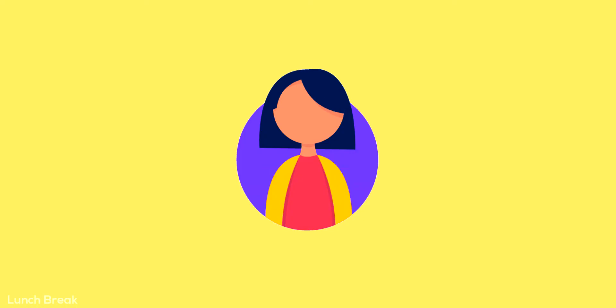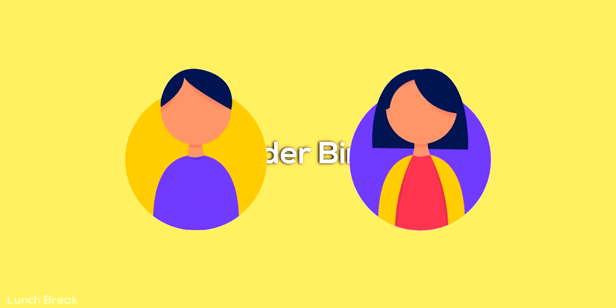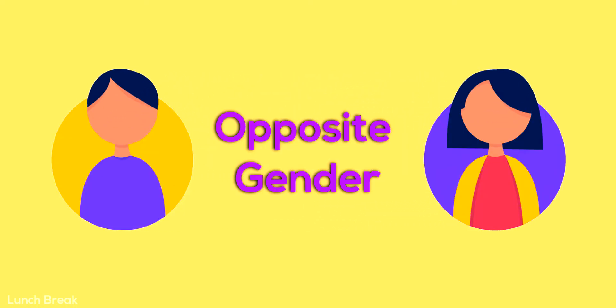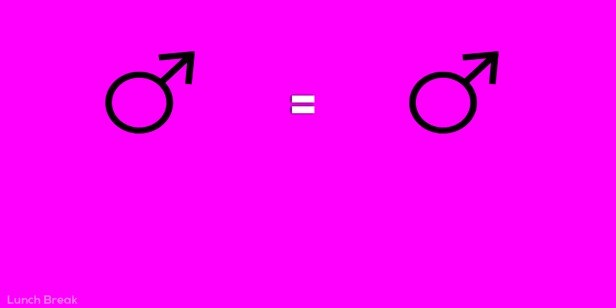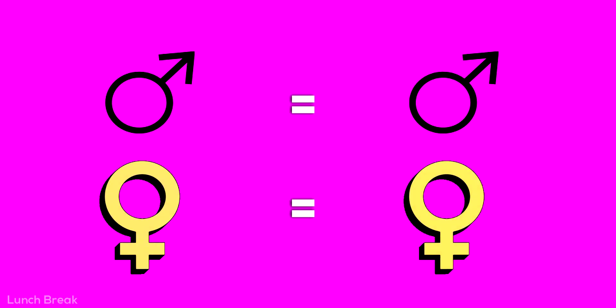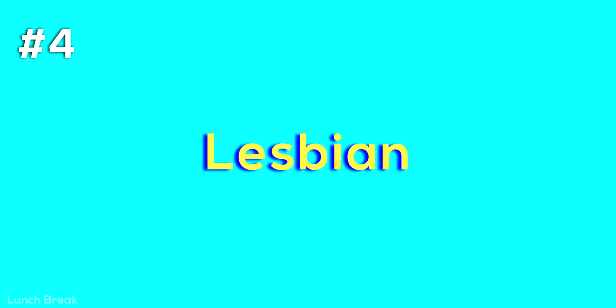If someone is a typical male or female, it is commonly known as gender binary. If they are attracted to their opposite gender, they are heterosexual. Gender binary means male or female, but if someone is attracted to the same gender as their own, then they are homosexual. If a male is attracted to a male, it is called gay, and if a female is attracted to a female, it is called lesbian.